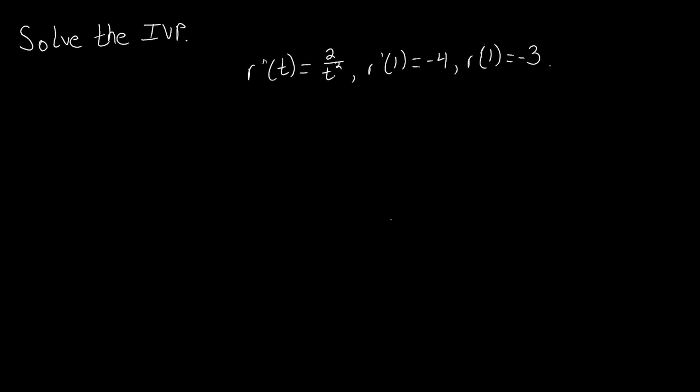In this video we're going to look at one more example of an IVP. In the previous video we looked at the case of an IVP being solved as a separable differential equation by splitting up the differentials and anti-differentiating both sides. But what we're going to look at in this case is we have r double prime of t equals some function with initial conditions for our derivative and for our function.